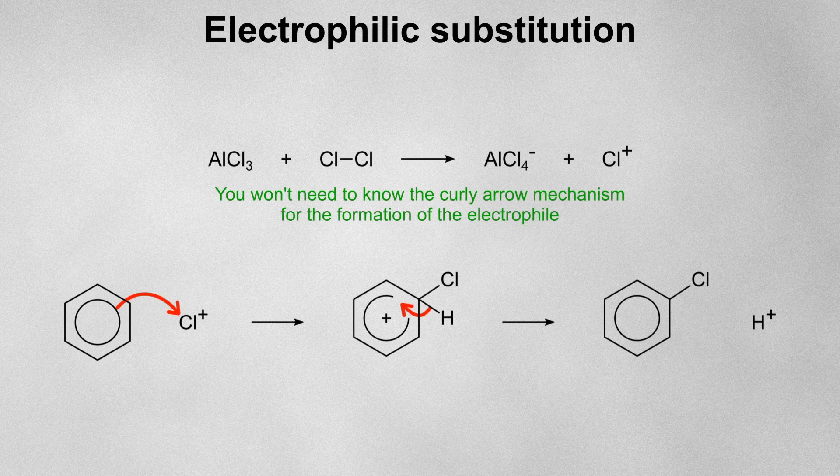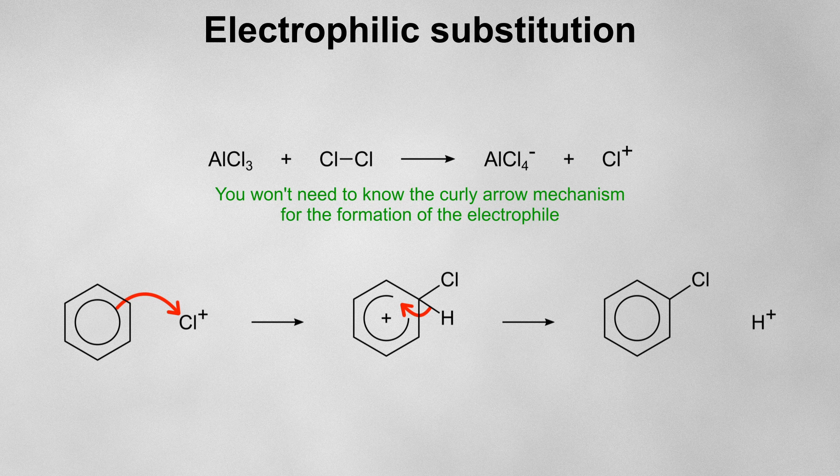If a reaction is happening at a benzene ring, the mechanism will always be electrophilic substitution, as this is the only mechanism you'll need for reactions at aromatic rings.